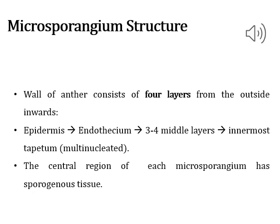The microsporangium consists of four wall layers. On the outer side, the outermost layer is called the epidermis, consisting of barrel-shaped cells that help in protection. Next to the epidermis is the endothecium layer, which helps in the rupturing or dehiscence of the microsporangium during pollen grain release for fertilization. Next to the endothecium, middle layers are present, consisting of three to four layers.